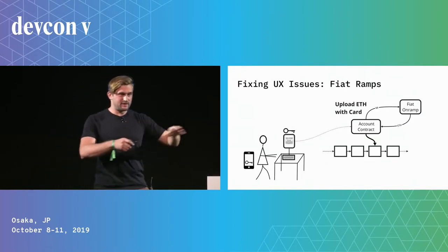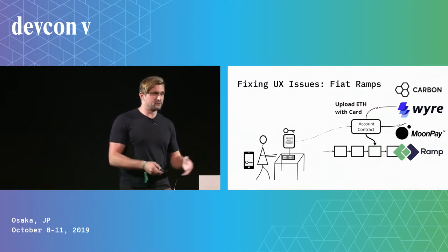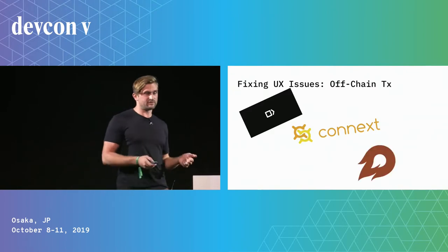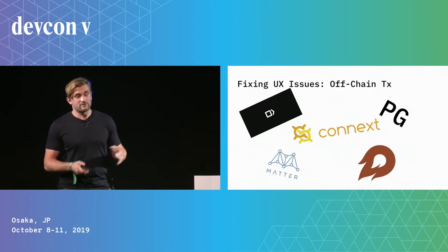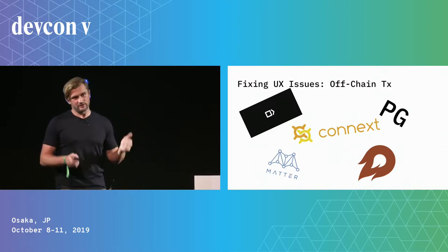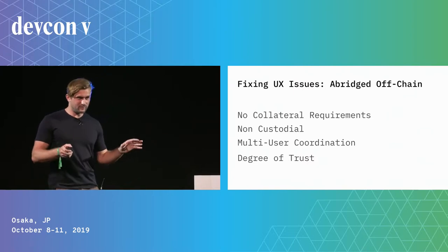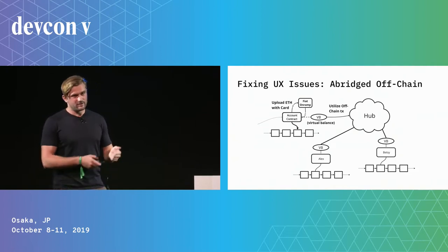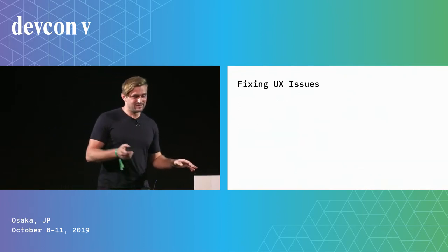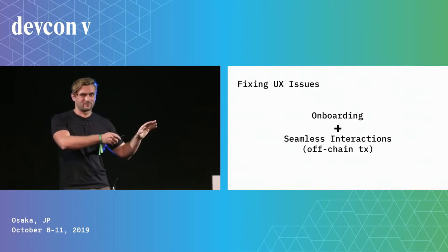The second piece of the onboarding puzzle is fiat ramps — Wyre, MoonPay, Ramp Network, Carbon — all competing in the same space, which is great. And if you have apps and users, you need off-chain transactions to make a seamless experience. Many teams are doing great work providing decentralized solutions for off-chain transactions. At Abridged we also have an off-chain system, though it does have a degree of trust using a central hub. Essentially: to fix UX issues you need onboarding plus off-chain transactions.